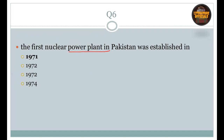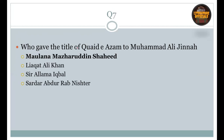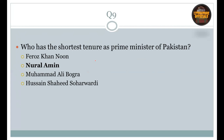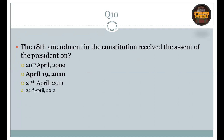Question number 6: The first nuclear power plant in Pakistan was established in 1971, right option A. Question number 7: Who gave the title of Quaid-e-Azam to Muhammad Ali Jinnah? That is Mawlana Mazharuddin Shaheed. Question number 8: When did Allahabad Paul deliver the presidential address in the annual session of All India Muslim League? Right option is D: 30 December 1930, Allahabad. Question number 9: Who had the shortest tenure as Prime Minister of Pakistan? That is Nurul Amin, right option B. Question number 10: The 18th Amendment in the Constitution received the assent of the President on right option B: April 19, 2010.